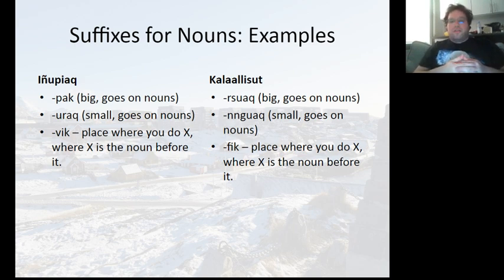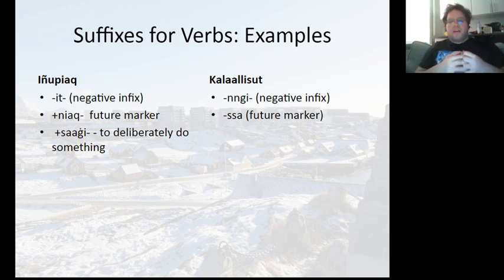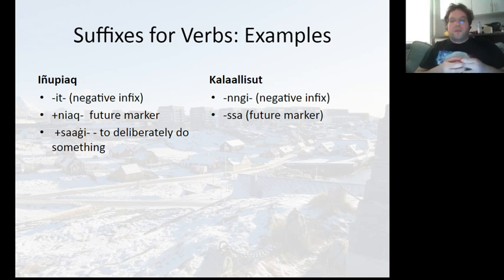Even at a basic level there is significant deviation between the two languages. The -it in Inupiaq indicates a negative infix, whereas in Kalaallisut that would be -ngi. Ayungilak literally means 'it is not bad' — that's how you say 'it is good.' The -sa indicates the future marker in Greenlandic, and in Inupiaq that's -naq. Sometimes there are entire suffixes that exist in one language but not the other, including -saaghi, which means 'to deliberately do something' — I don't think there's a Greenlandic equivalent.